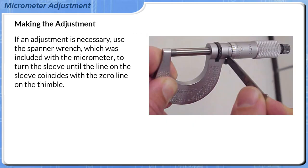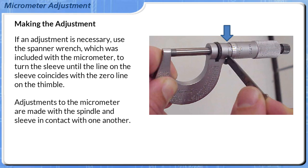If an adjustment is necessary, use the spanner wrench, which was included with the micrometer, to turn the sleeve until the line on the sleeve coincides with the zero line on the thimble. Adjustments to the micrometer are made with the spindle and sleeve in contact with one another.